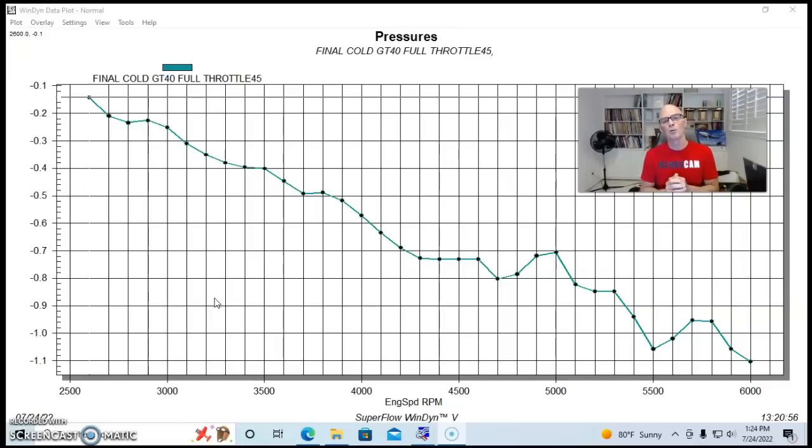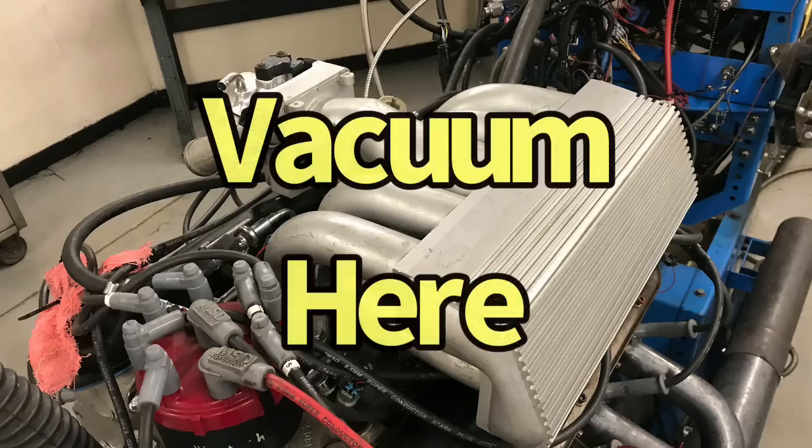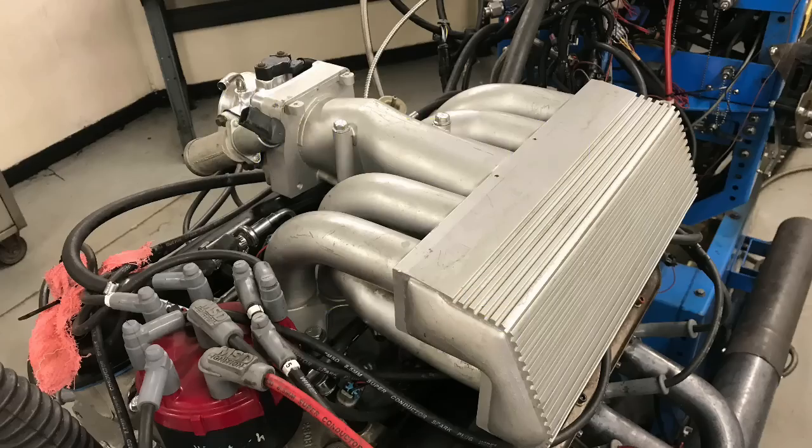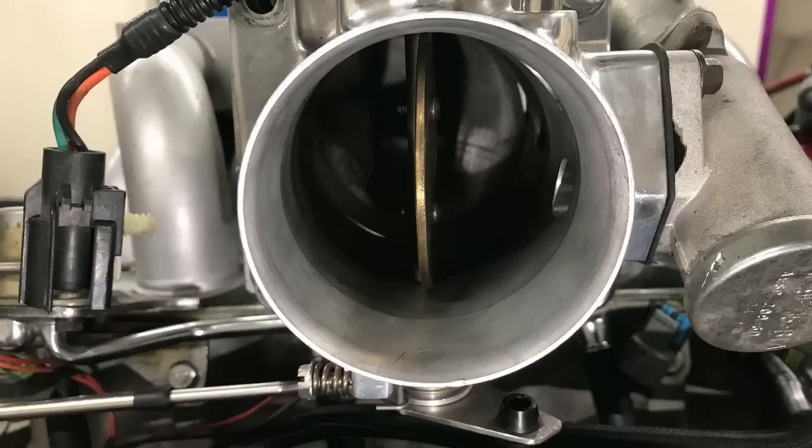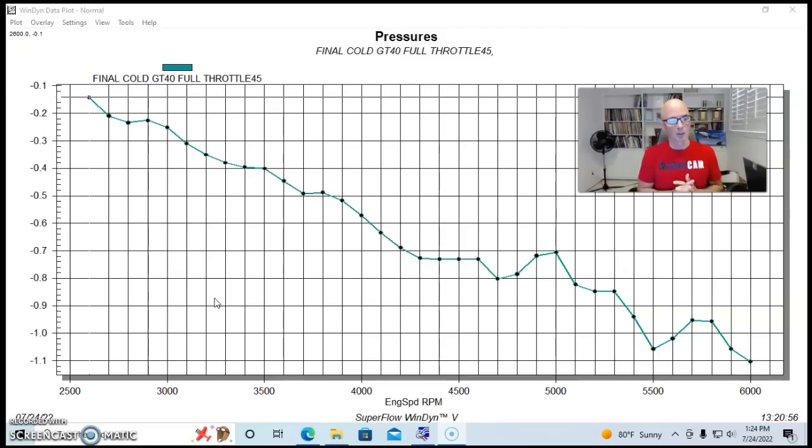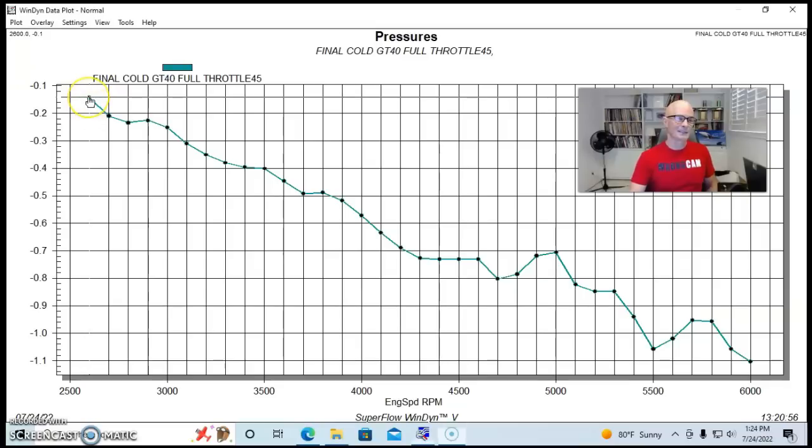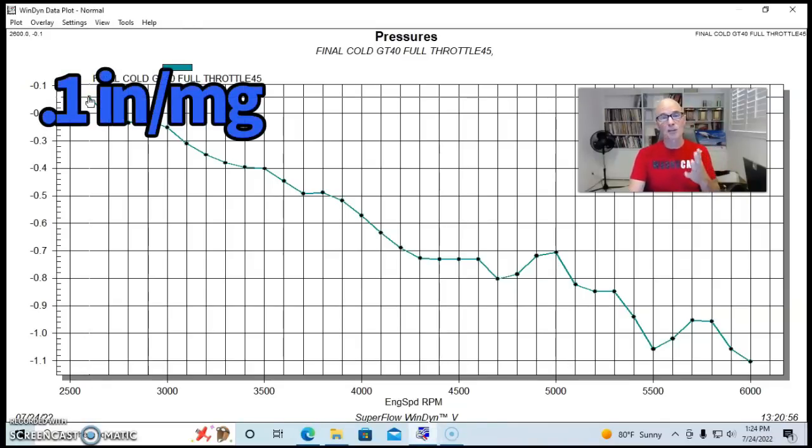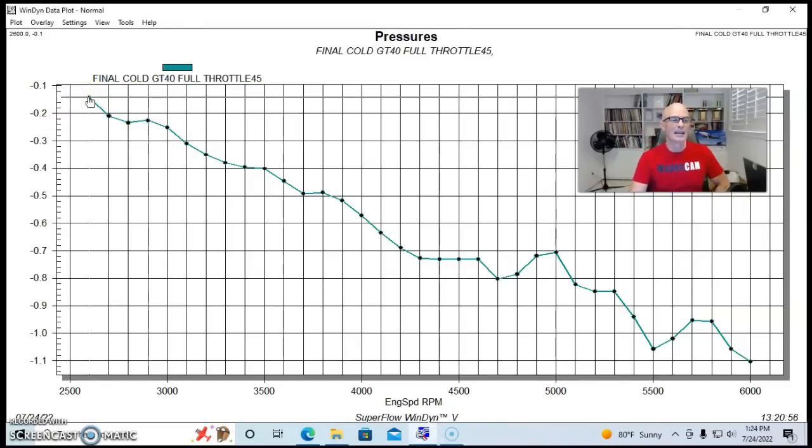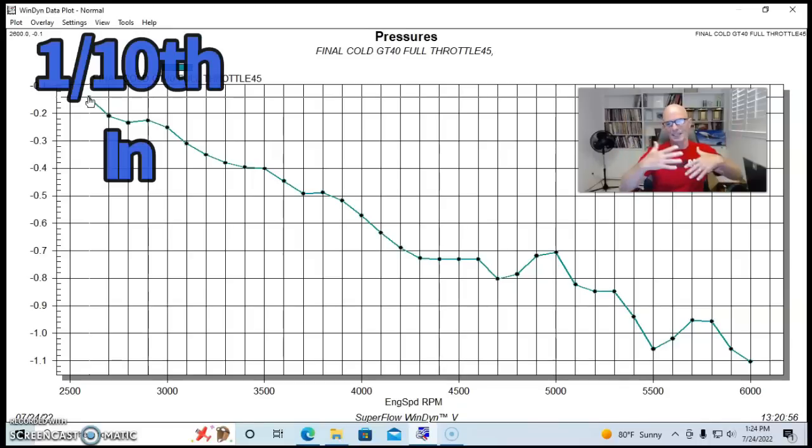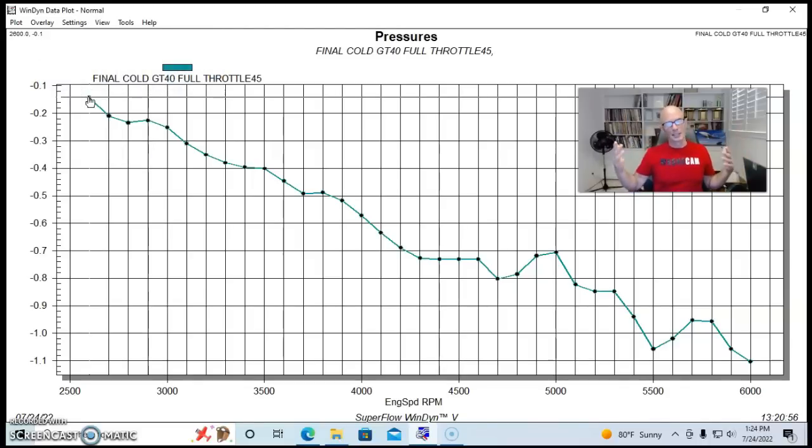So I'll show you what happened when we were data logging the vacuum that's present in the system in the intake manifold. So run at full throttle with our GT40 intake manifold and our 65 millimeter throttle body. What happened was we started off at just right around a tenth of an inch of mercury, which is right near, basically, that's full throttle, and it's basically very little restriction, very little vacuum.